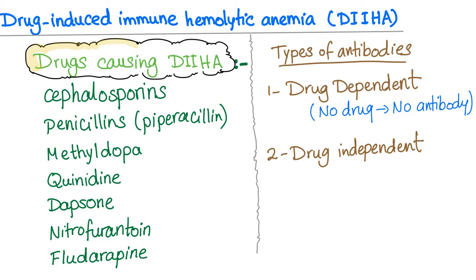The drugs that cause drug-induced immune hemolytic anemia include, but are not limited to, Cephalosporins — especially Cefotetan (second generation) and Ceftriaxone (third generation) — the Penicillin family, including Piperacillin, Methyldopa, Quinidine, Dapsone, Nitrofurantoin, and Fludarabine.